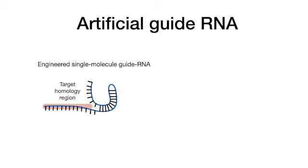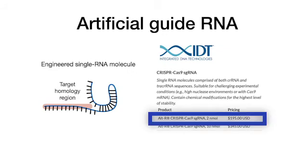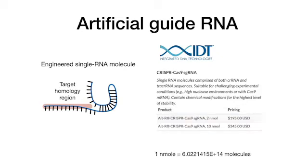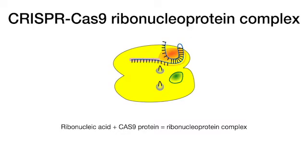The result is the guide RNA with the highlighted target homology region — a single RNA molecule sufficient for genome editing, which you can even design and order yourself. When guide RNA and Cas9 are expressed in the same cell, for example as transgenes, or mixed in a test tube, the RNA and protein assemble to form a ribonucleoprotein complex.